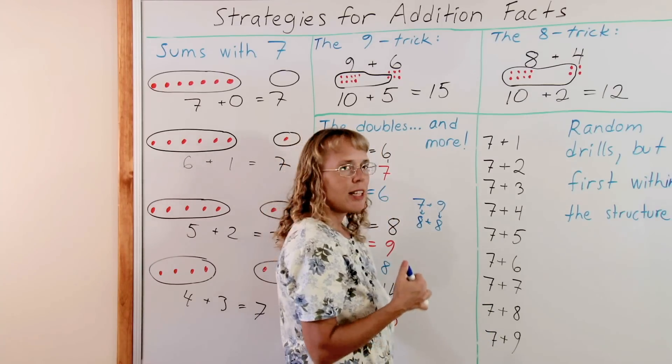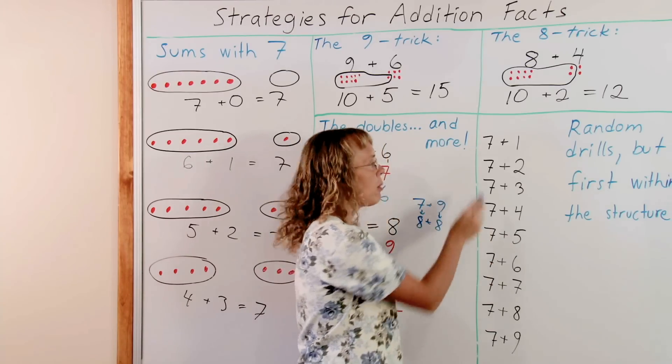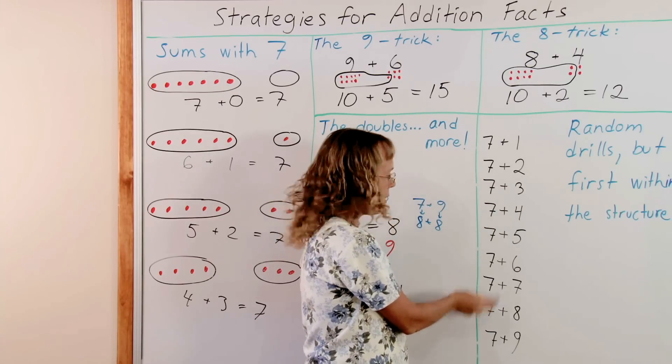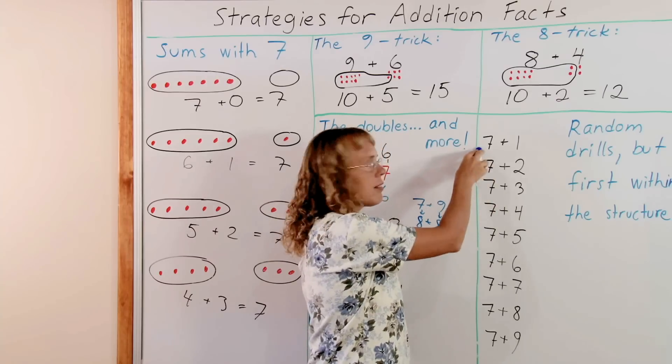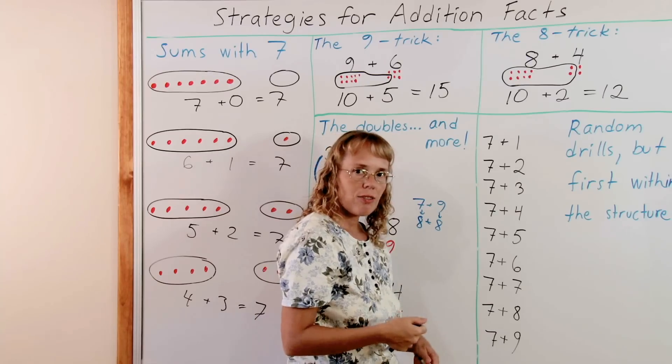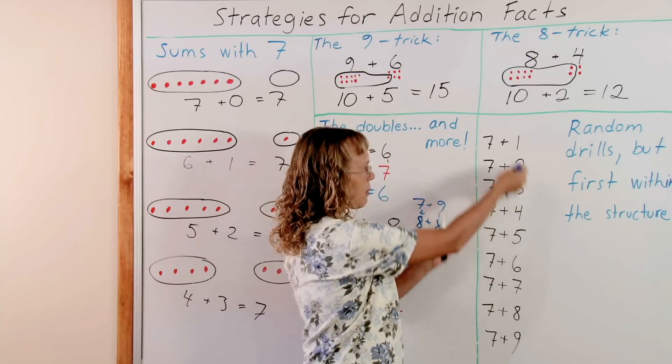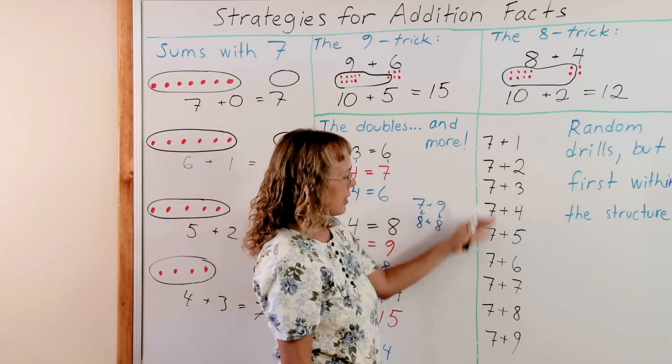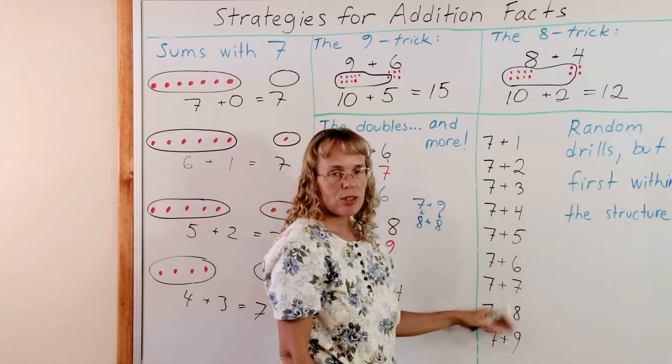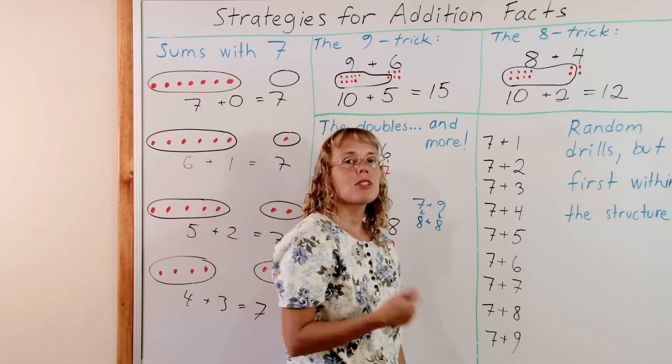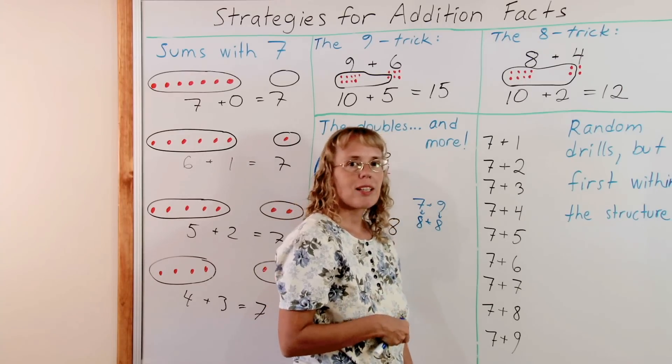So we will drill randomly like this. The teacher will just point to a problem and say it. 7 plus 2, and then 7 plus 8, and then 7 plus 5, and then 7 plus 1, in random order. So then it drills the addition facts, yet it has this support structure so to speak for the student. And after this, after the student has mastered addition facts in this format, then it's time for truly random drill with flashcards or something like that.